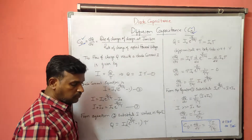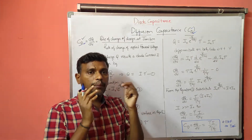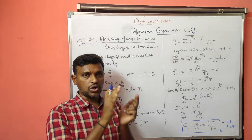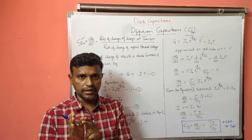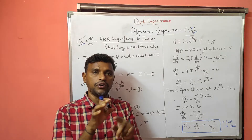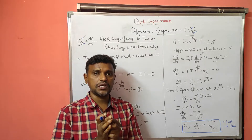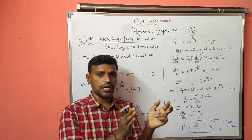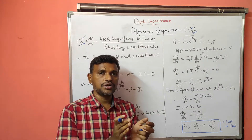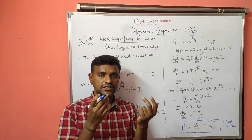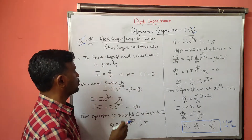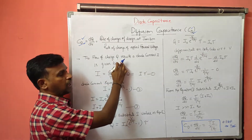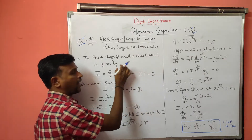When we apply the forward bias, the holes will move from P side to N side and electrons will move from N side to P side. Because of that, there will be a movement of charge carriers. Generally, current is defined as the rate of flow of charge with respect to time, and here the flow of charge Q results in a diode current I.